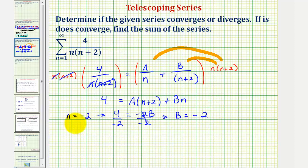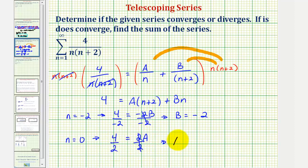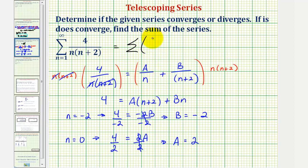And now to find A, we'll let n equal zero. Notice when n is zero, B times n would be zero. So that would give us the equation four equals A times two, or two A. And if n is zero, this term would be zero. Dividing both sides by two, notice how we have A equals positive two. So going back up to our infinite sum, this means we can now rewrite the series as two divided by n, and since B is negative, let's write this as minus two divided by the quantity n plus two, from n equals one to infinity.